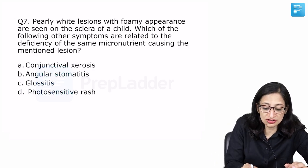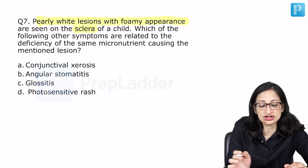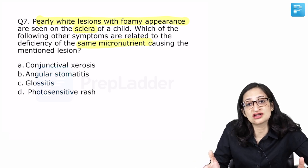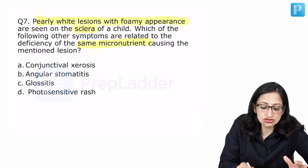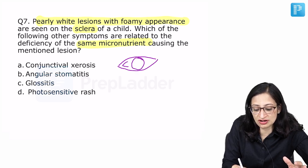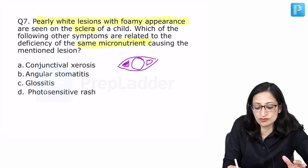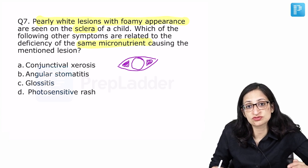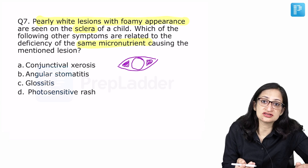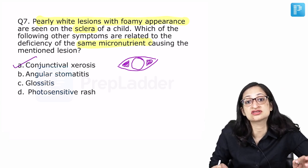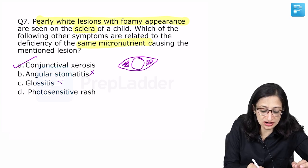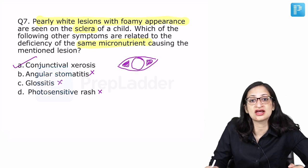Pearly white lesions with foamy appearance are seen on sclera of a child. Which of the following other symptoms are related to the deficiency of the same micronutrient causing the mentioned lesions? This question again a pretty straightforward question but it requires some analysis on your part. What is mentioned is pearly white lesions with foamy appearance on the sclera of the child. These pearly white lesions can be Bitot spots. Conjunctival xerosis moving on to Bitot spot can give rise to this pearly white foamy appearance and that friends we know classically is a sign of vitamin A deficiency. Which of the other features are seen in vitamin A deficiency? Conjunctival xerosis yes. In fact, conjunctival xerosis is the earliest sign of vitamin A deficiency while night blindness is the earliest symptom of vitamin A deficiency. Angular stomatitis and glossitis, no they are seen in riboflavin deficiency. Photosensitive rash, no again in niacin deficiency.